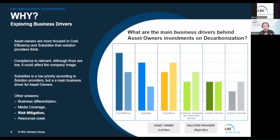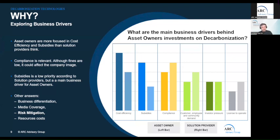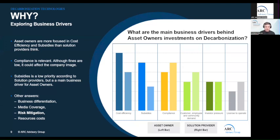We went out and asked through one-to-one interviews with asset owners and also through surveys reaching both asset owners and solution providers, asking them to rank the business drivers behind decarbonization initiatives. In the graph, the left bar shows what asset owners think are the main business drivers, and the right bar shows what solution providers think. The main business driver according to asset owners is cost efficiency — and I can totally see this. In an energy-intensive industry like chemicals, with the current energy crisis and government pressure to transition to more expensive green energy sources, I completely understand why asset owners see cost efficiency as the main driver today.